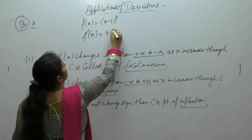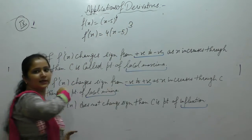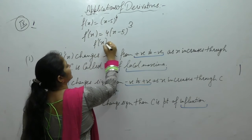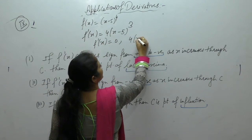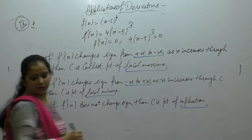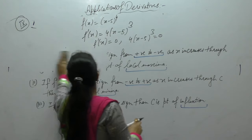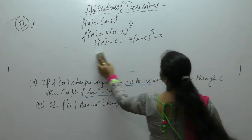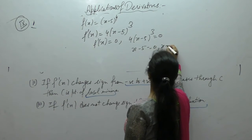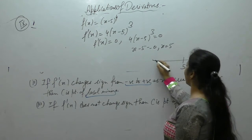First find the derivative: f'(x) = 4(x-5)³. After that, put the first derivative equal to zero. From here we get x - 5 = 0, so the critical point is x = 5.